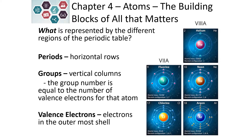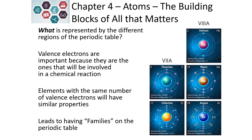Elements in the same vertical column have similar properties to each other. The reason for this is because they have the same number of valence electrons, and the group number tells us the number of valence electrons. Valence electrons are the electrons in the outermost shell or outermost energy level of the atom — the one furthest from the nucleus. Valence electrons are extremely important because they help determine the properties as well as the chemical reactions that elements are going to undergo. The same number of valence electrons will have the same properties, which is why we call them families or groups.